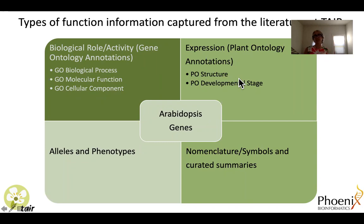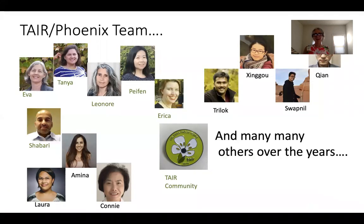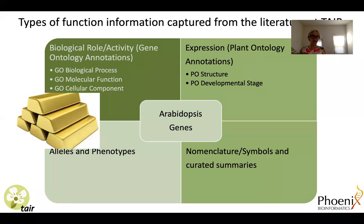We capture low-throughput gene expression studies — for example, GUS fusion experiments — using plant ontology annotations, and we also get information about alleles and phenotypes. Arabidopsis has a very extensive set of mutations, including many T-DNA insertion mutants, and we capture this in the database. In addition, we maintain the gene symbol registry to ensure that Arabidopsis nomenclature rules are adhered to. We capture gene names and symbols from papers, craft curated summaries, and the goal is to have a gold standard functional annotation for the Arabidopsis genome that serves as a reference annotation for this model plant species.